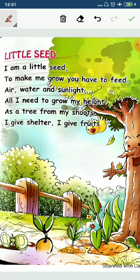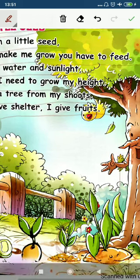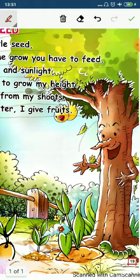As a tree from my shoots, I give shelter, I give fruits. You can see the tree from its branches — these are shoots. This is a stem, which is straight from the tree.